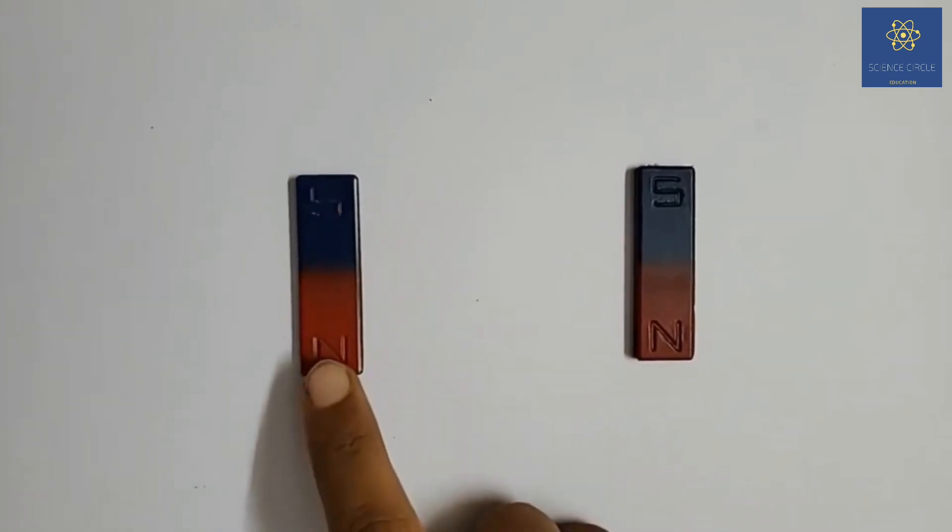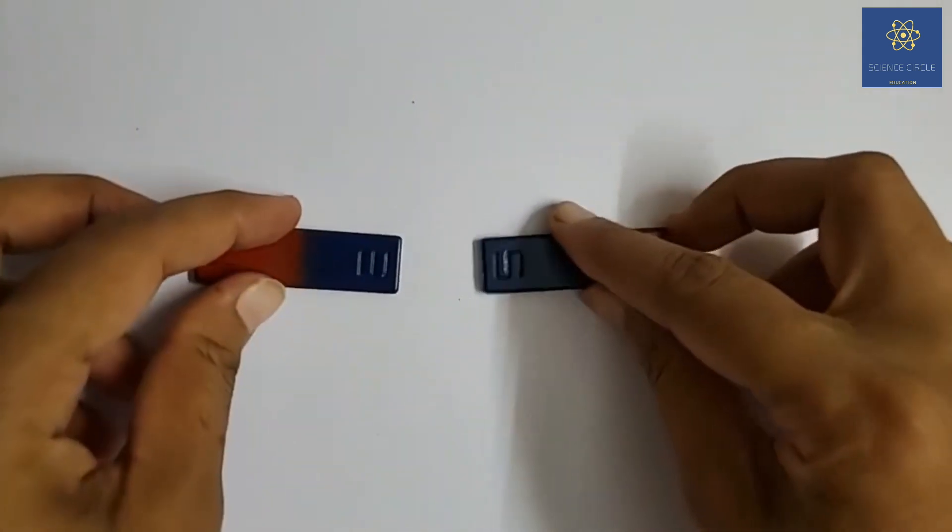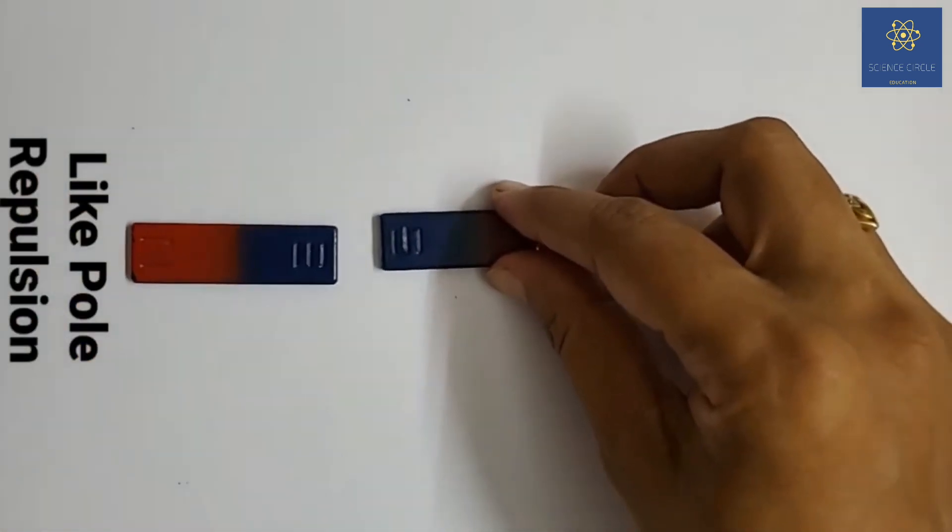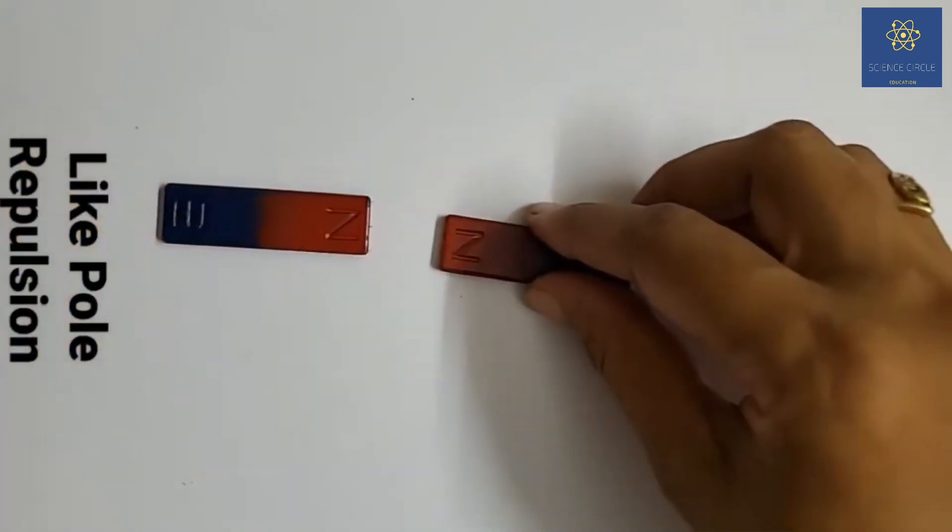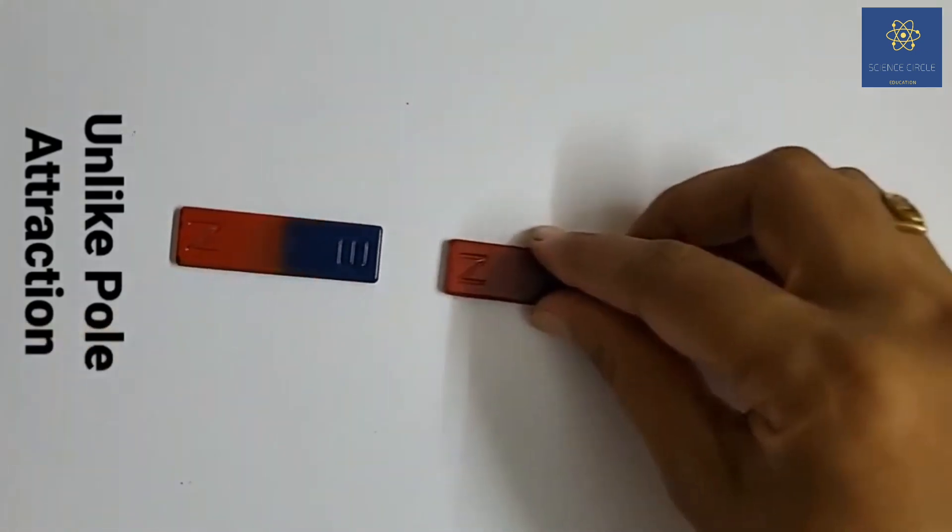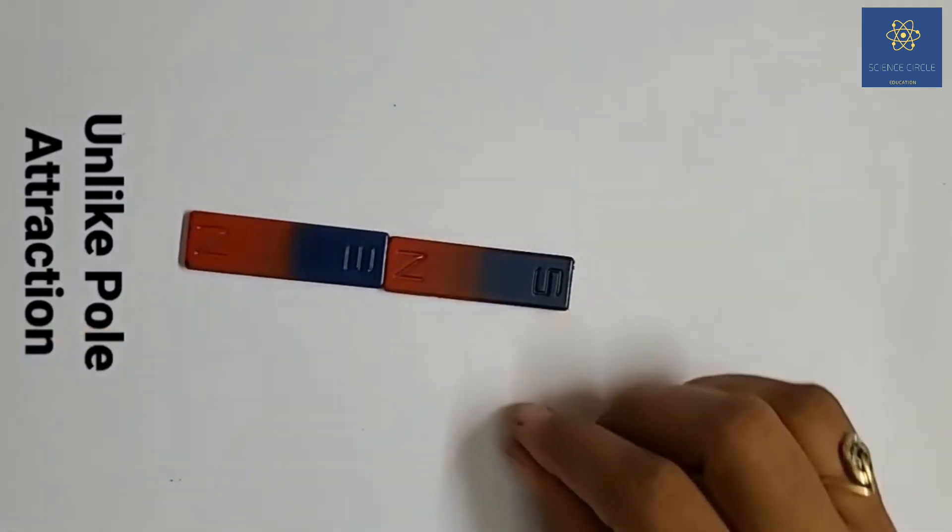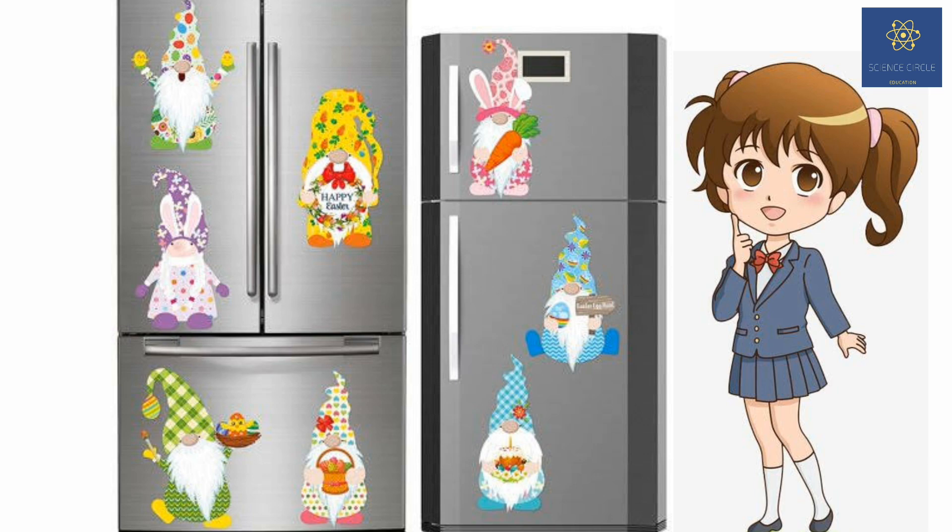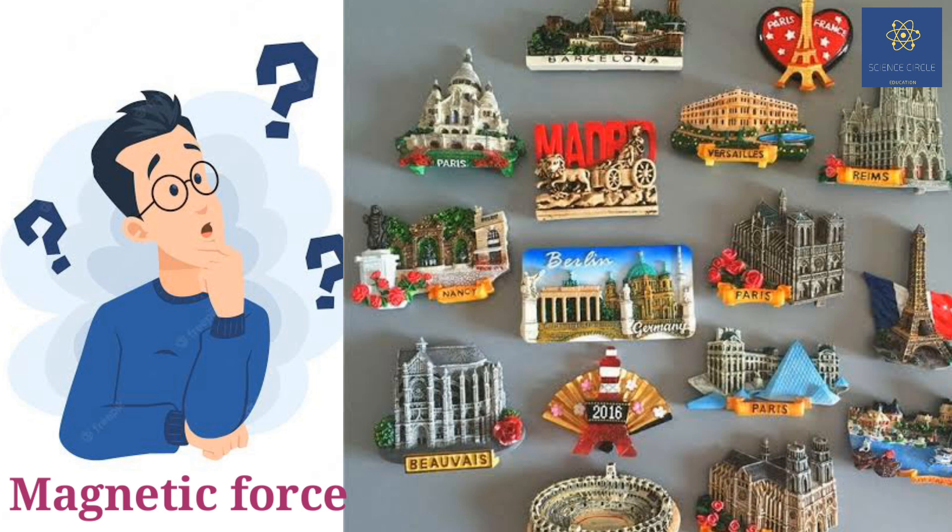We can see magnetic force of repulsion between the like poles of the magnet and force of attraction between the unlike poles of two magnets. Now can you tell me how stickers on the steel almirah or refrigerator can be stuck without glue? Yes, you are right, magnetic force is applicable here.